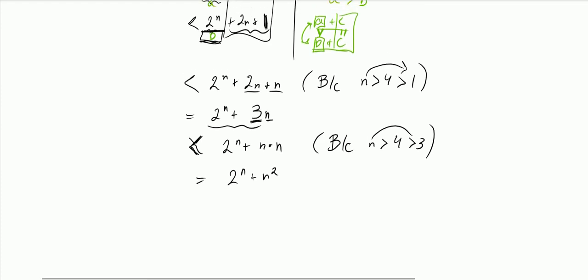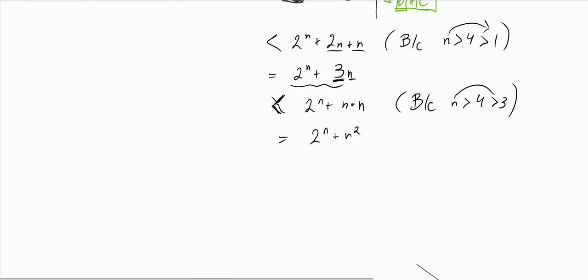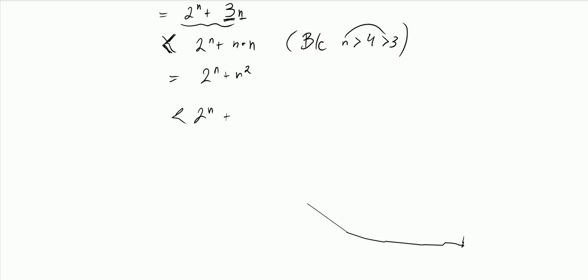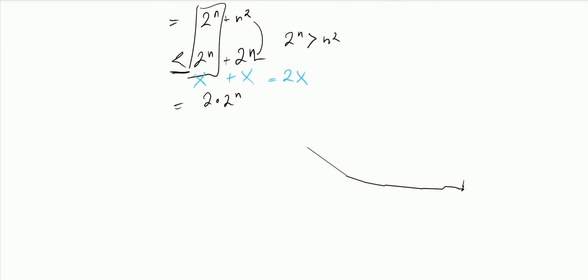What do I know about n squared? From the inductive hypothesis, n squared is less than 2 to the n. So 2 to the n plus n squared is less than 2 to the n plus 2 to the n. And 2 to the n plus 2 to the n equals 2 times 2 to the n. By the power rule, 2 times 2 to the n equals 2 to the n+1.